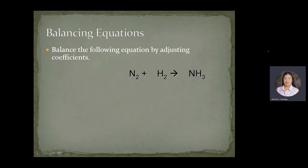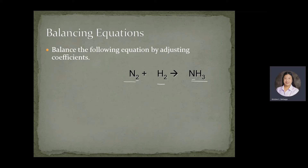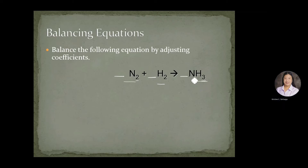Let's balance the equation: N2 plus H2 yields ammonia. Nitrogen gas added with hydrogen gas yields ammonia. Checking nitrogen: we have two in the reactant and one in the product — so this is an unbalanced equation. We will write coefficients to balance it. Remember, coefficients are written before the formula and are never inserted in between. We will check the element with the greater number of atoms — in this case, hydrogen, which has three in the product and two in the reactant.